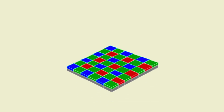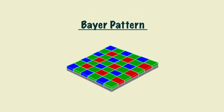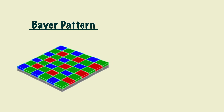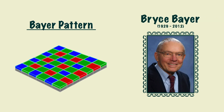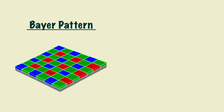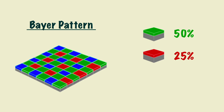Some cameras arrange their photosites on the sensor like this. This is what's known as the Bayer pattern, named after its creator, Bryce Bayer. This is a common pattern, but it's important to note that not all sensors are designed this way. You may have noticed that half the photosites are green, whereas only one quarter are red, and the other quarter are blue.